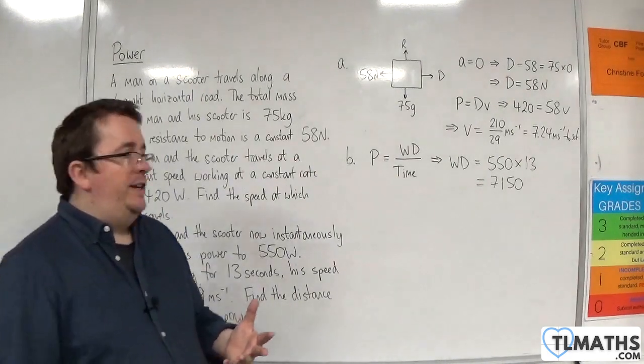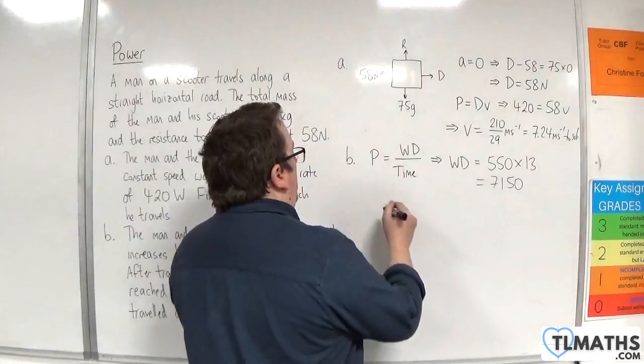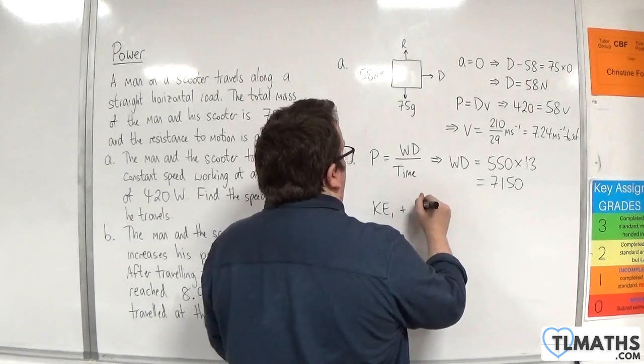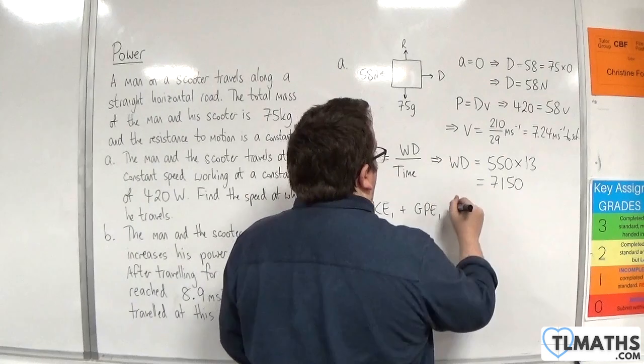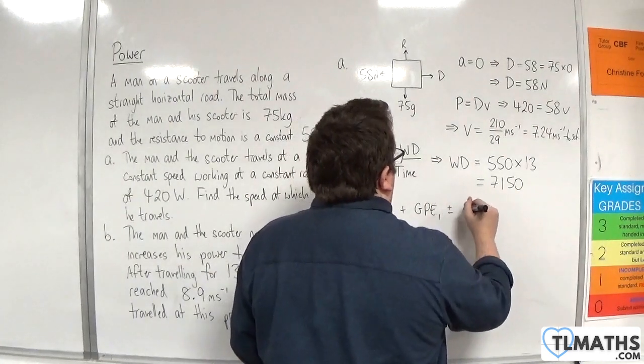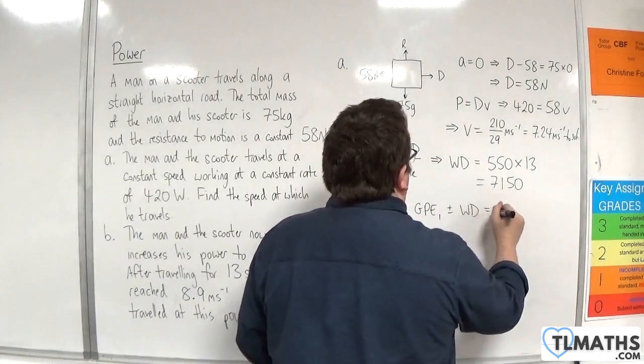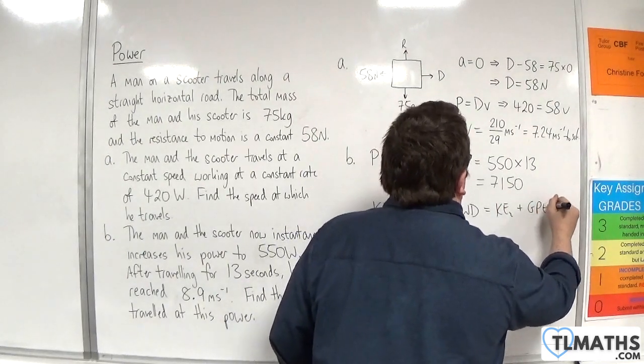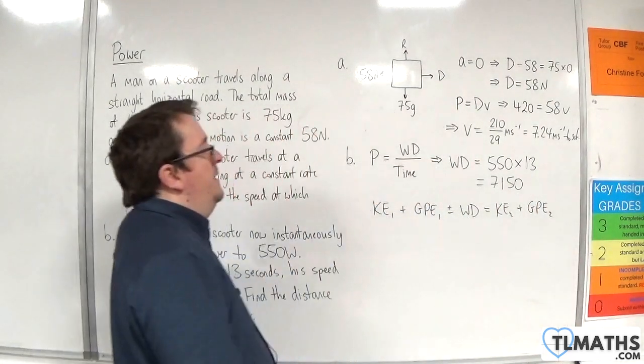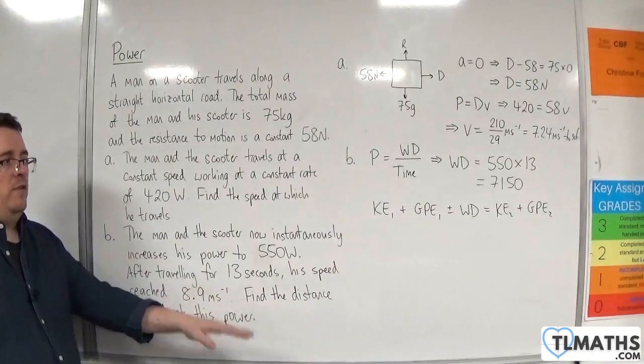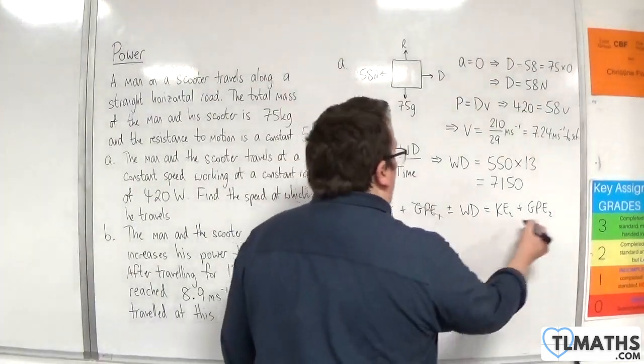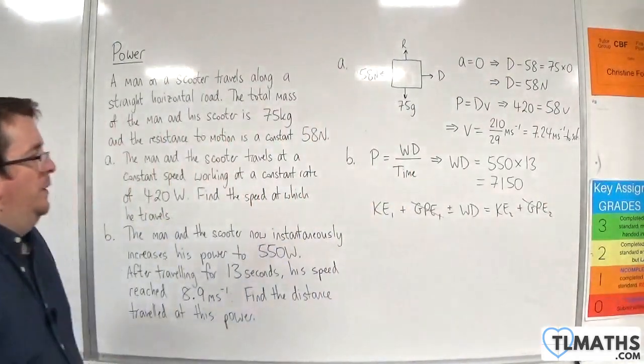Now we're going to use the work energy principle. The initial kinetic energy plus the initial gravitational potential energy plus or minus the work done is going to be equal to the final kinetic energy plus the final gravitational potential energy. We don't need to worry about the gravitational potential energy because it's just at one height all the way through.